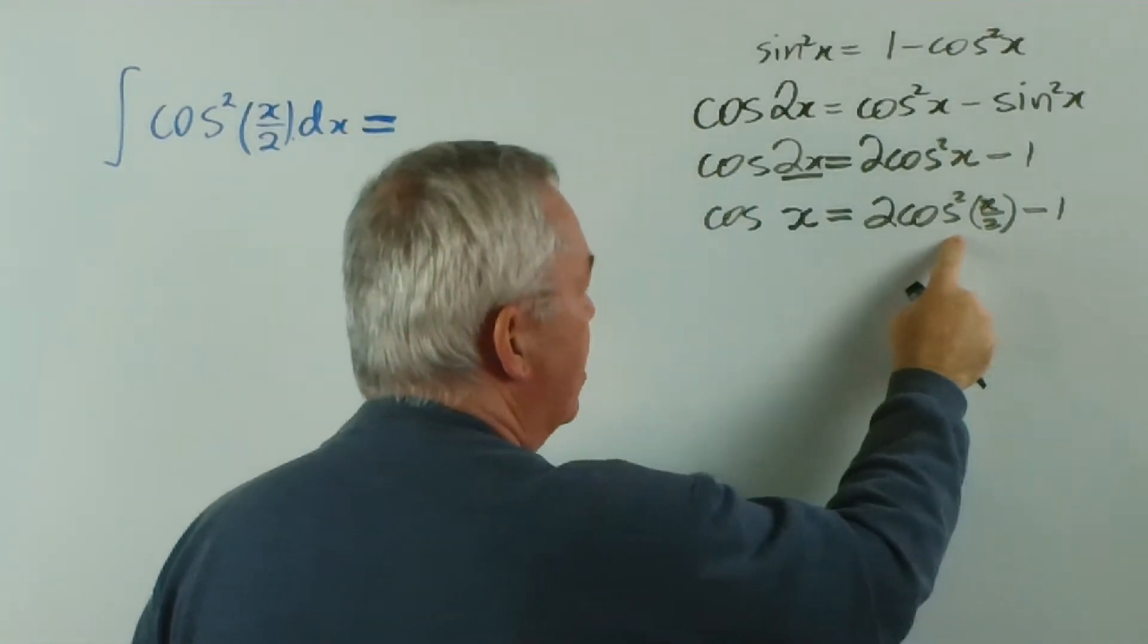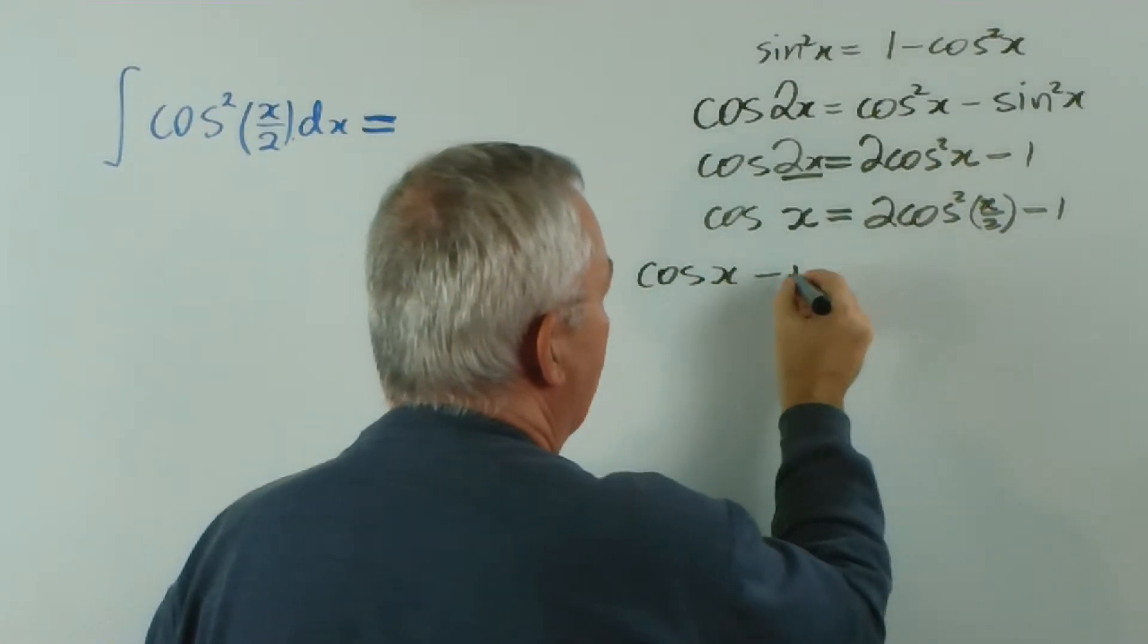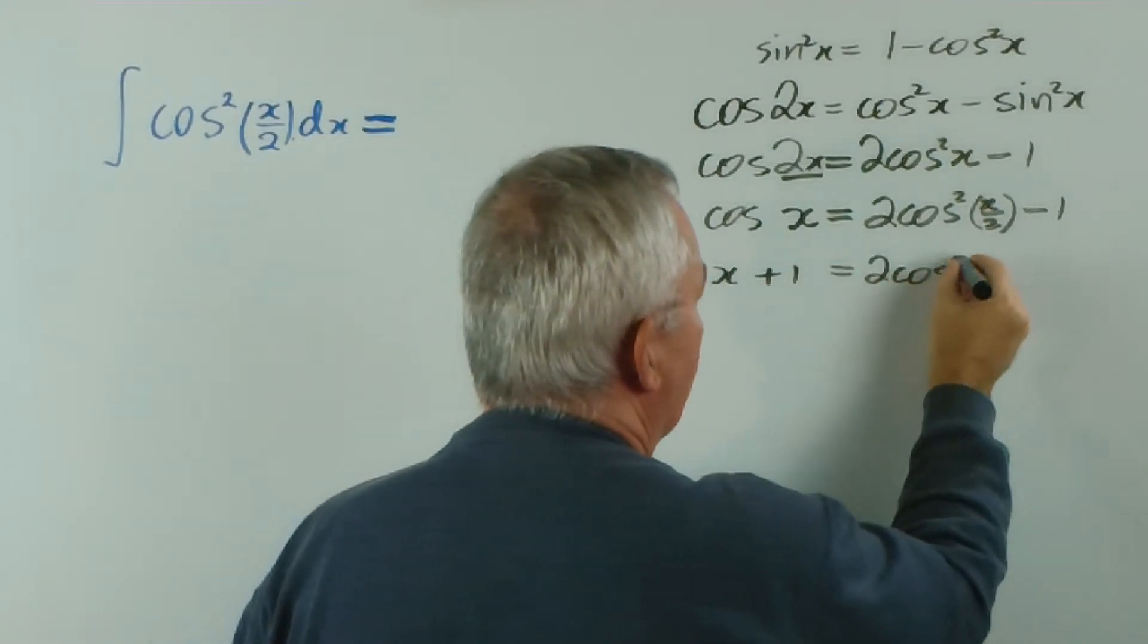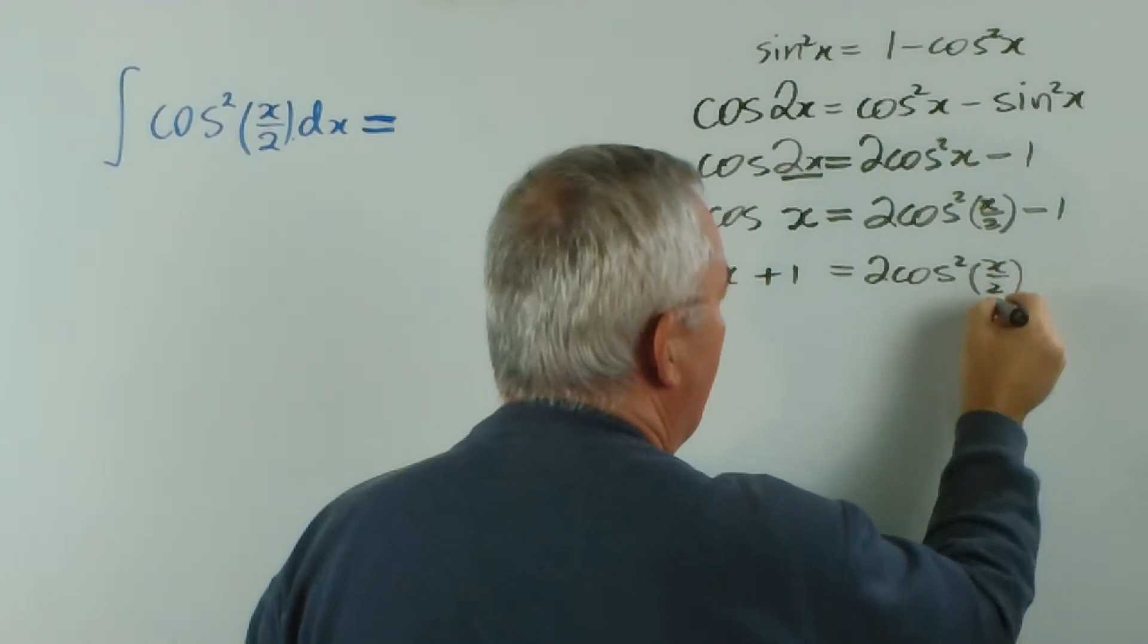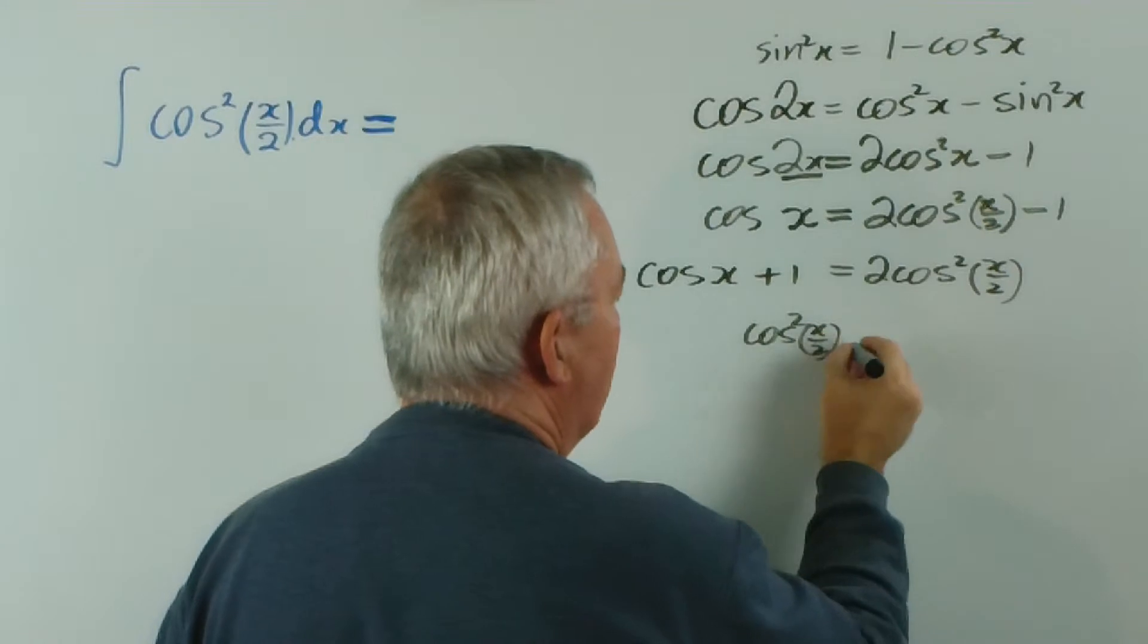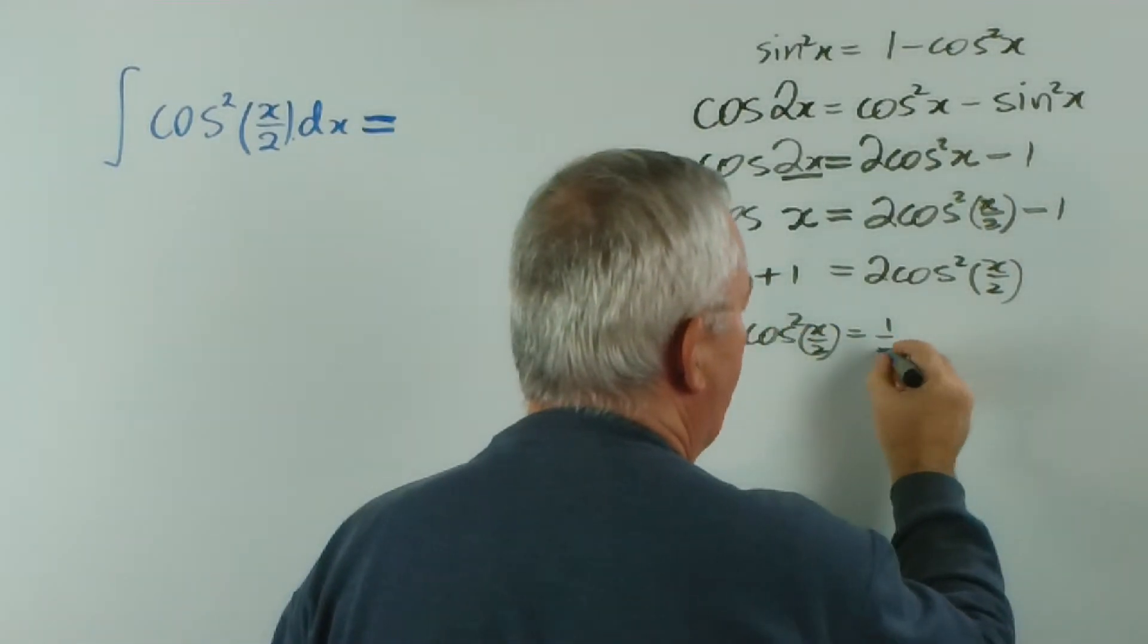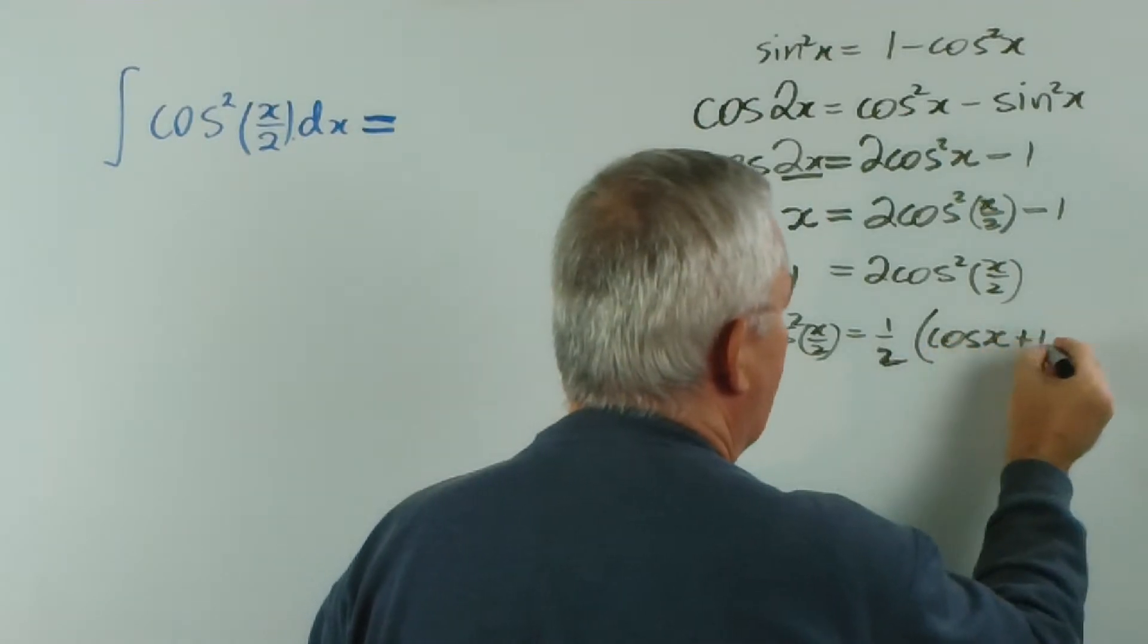And if we rearrange this, we get cos x plus 1 is 2 cos squared x over 2. So therefore, cos squared x over 2 is a half of this. I'll just put a half out the front, cos x plus 1.